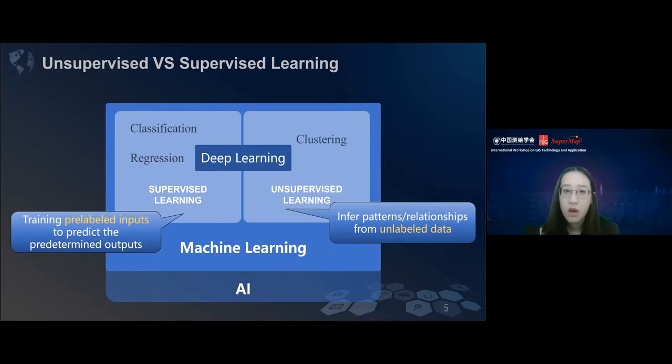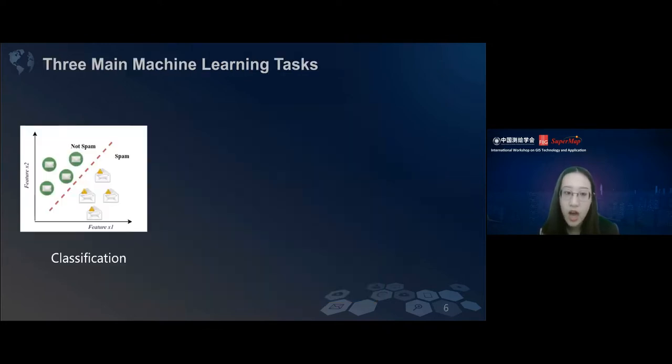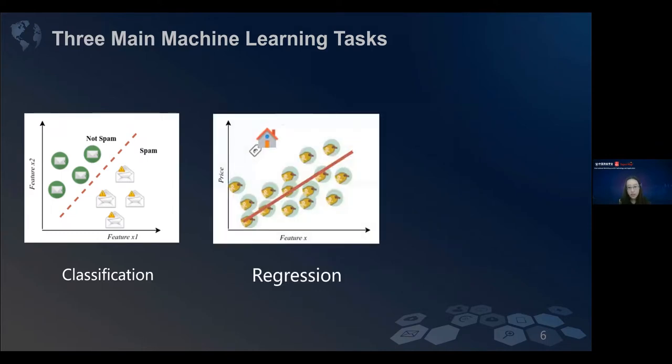Classification algorithms are used when the output features are categorical, like true or false, yes or no. Like in this picture, we try to classify our email into spam or non-spam email. Regression is used for continuous data. They try to use a function to show the relationship between X and Y, like we want to predict housing price or tornado forecasting.